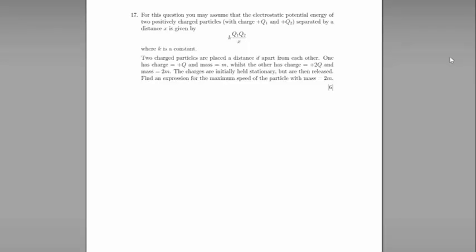Question 17. So we have two charged particles placed at a distance apart from each other. One has got charge plus Q and mass M and the other has charge plus 2Q and mass 2M. The charges are initially held stationary but are then released. Find an expression for the maximum speed of the particle with mass 2M.